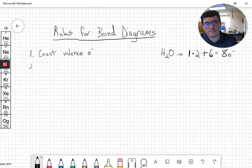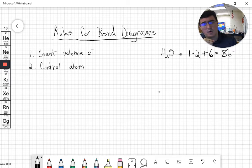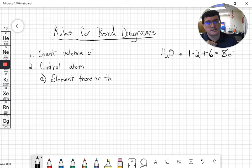All right. So the second step is we need to identify the central atom. So how do you identify the central atom? There are sort of two rules here. I call sub-part A the no duh rule. Your central atom is going to be the element there are the fewest.